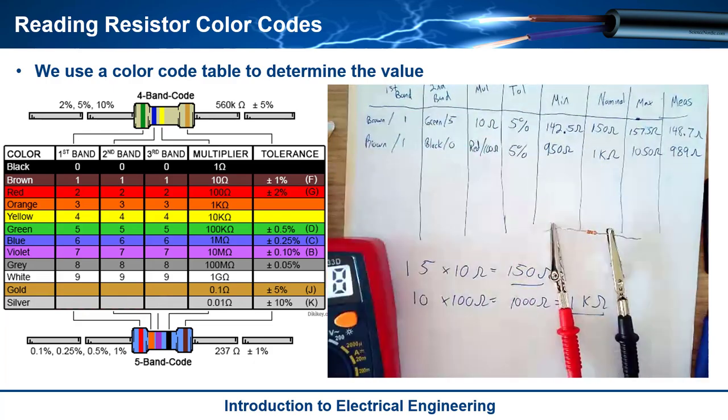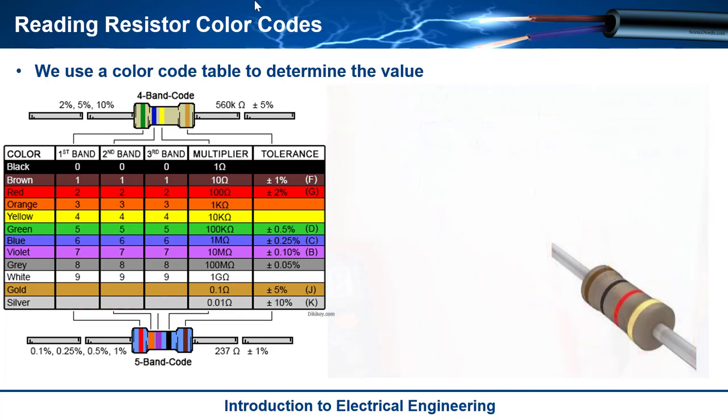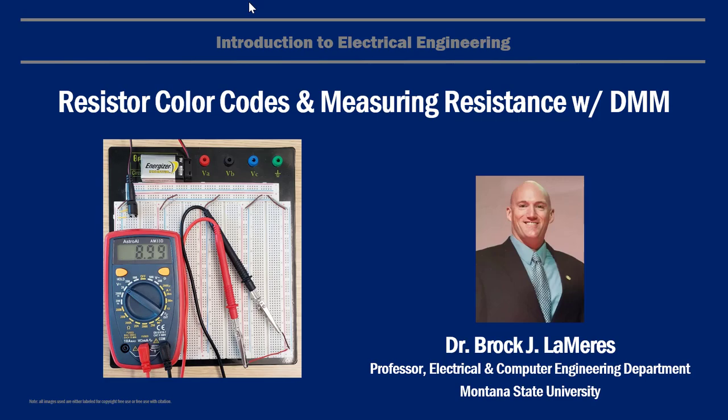So that is how you use color codes to actually determine the value of a resistor, and that's how you measure it with a DMM. All right, see ya.